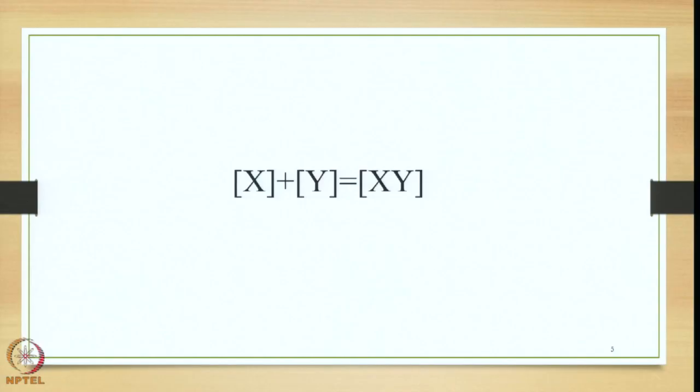The structure of the Bahuvrihi Samasa can be briefly explained with the help of an equation, where we have X and Y — two independent separate elements in terms of word form, meaning, and accent. The plus sign between them indicates they are interrelated and the speaker of Sanskrit has decided to merge them together. The process ends in the production of the output X-Y, which is one unit, with two units as input and one unit as output.